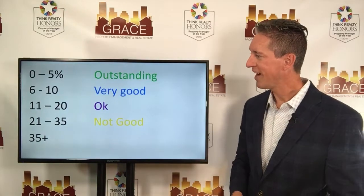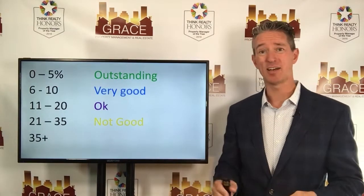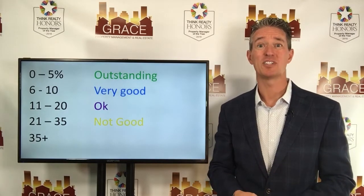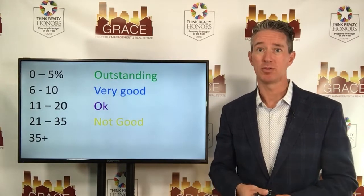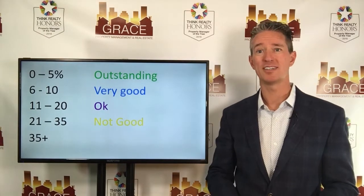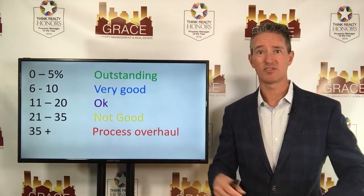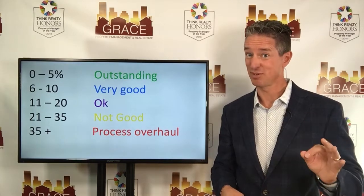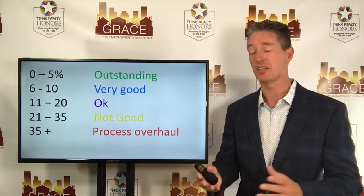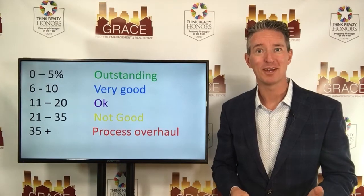Alright, 21 to 35% — that's not good. If you're over 20% delinquent at the end of the month, you need to tighten up your process. That's just not a survivable place for a business to be. Now what about 35% and above? With all due respect, you need a process overhaul — or just get out of the business. There aren't a lot of companies there. Maybe when you take over a new messy project and you're trying to clean it up, you're in this range — that's probably why they've hired you or changed property management companies.